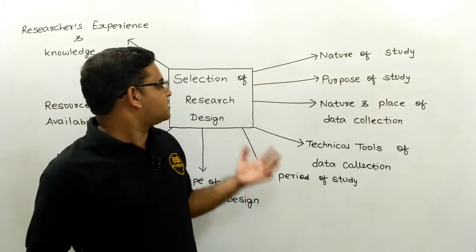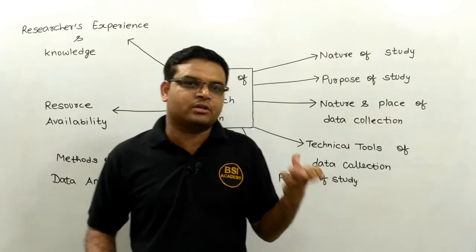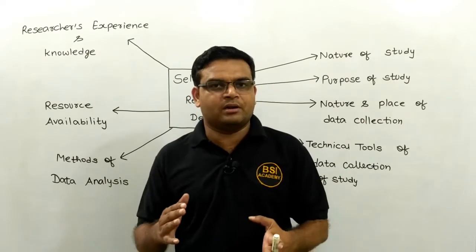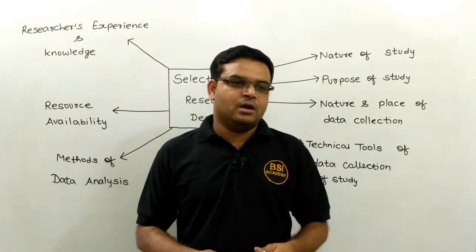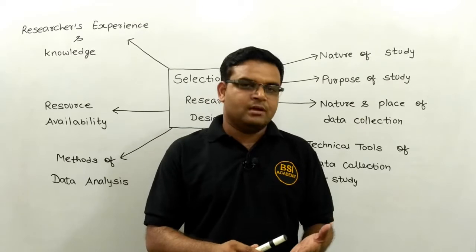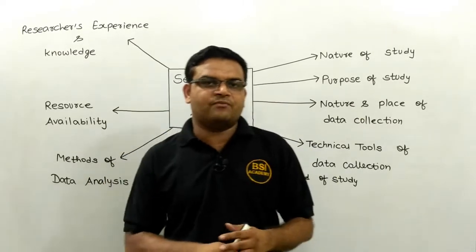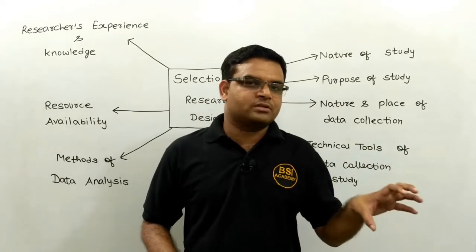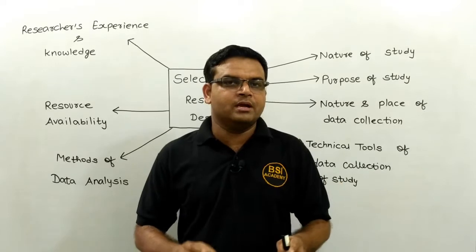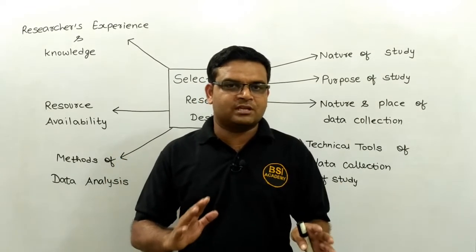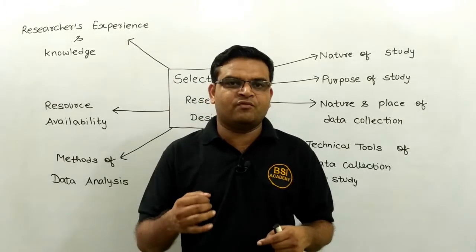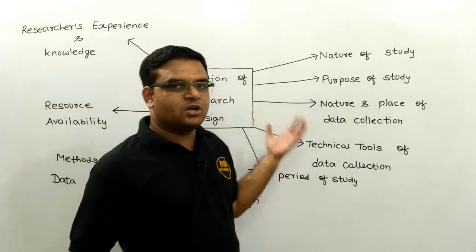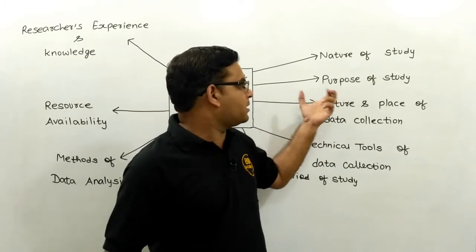In this topic I will discuss the important types of criteria available for the selection of research design. First is the nature of study. For our research design, we have different types of study — we can select science study or sociology type of study — so all these studies are very different in their nature. Different types of study have different types of research design. For example, if I choose a computer science topic and do research on it, I will select only those research designs which will fulfill my needs. Your nature and scope of study play a very important role in your selection of research design.